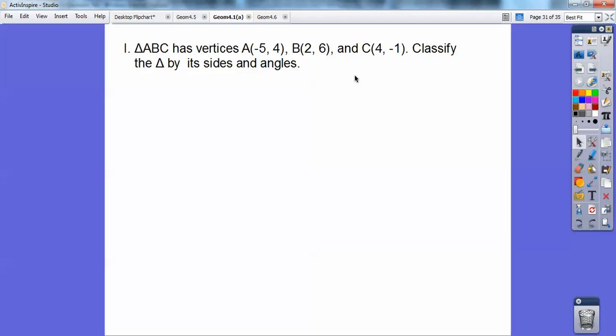So I'm going to have to use distance formula to figure out the lengths of these sides. And then by its angles, I think the only thing I can classify by the angles is, is it a right angle or not? So what I'm going to do is use slope formula and see if I get opposite reciprocals to get a right angle. I'm almost sure it's going to be. So here's distance and slope formula right there.